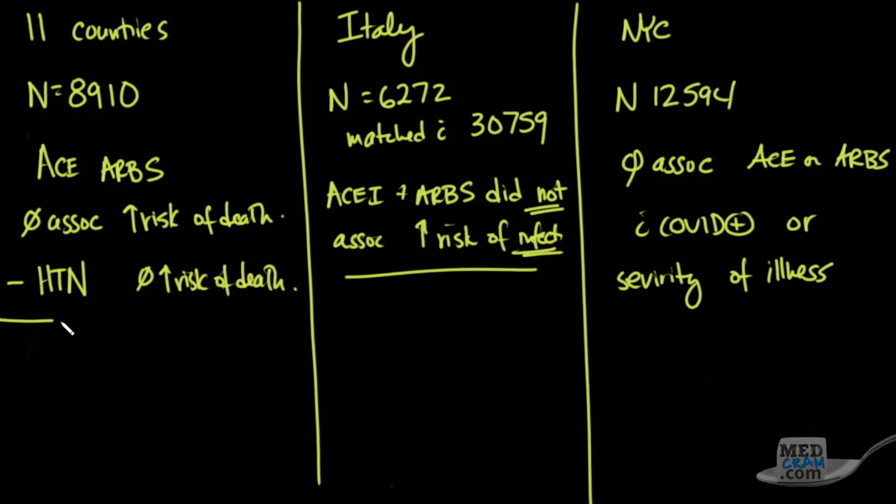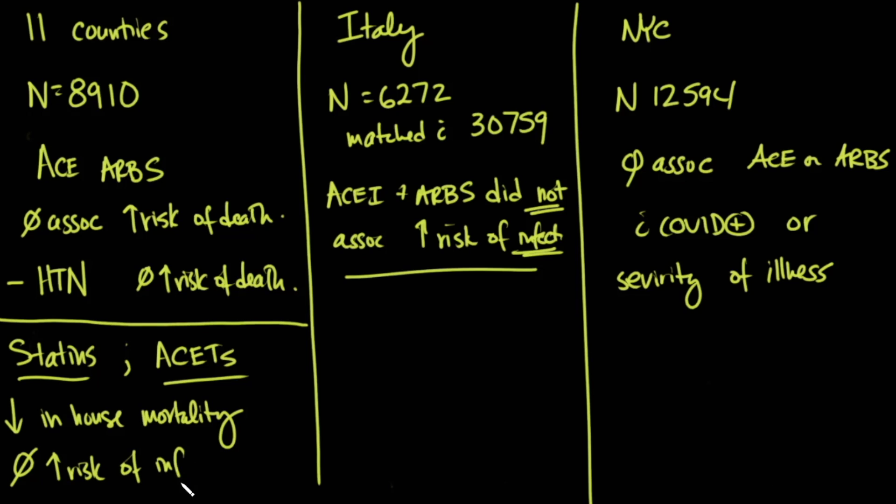If we go back to this analysis, the one that looked at 11 countries, they did find something interesting with statins. These are medications used for cholesterol, and they also found it with ACE inhibitors. These medications were associated with a decrease in in-hospital mortality, but they were not associated with an increased risk of getting the infection. That is actually quite remarkable.